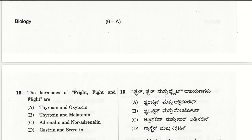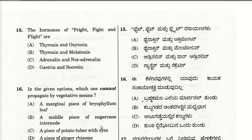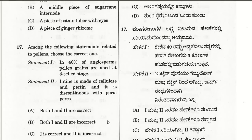The sixteenth question: which cannot propagate by vegetative means? A marginal piece of Bryophyllum leaf can propagate, but a middle piece of sugarcane internode cannot propagate — it requires the nodal region. So B is the answer; the plant cannot propagate by vegetative means because it is missing the nodal region.